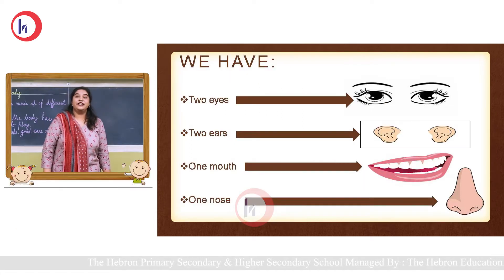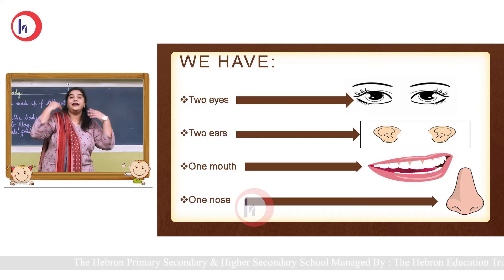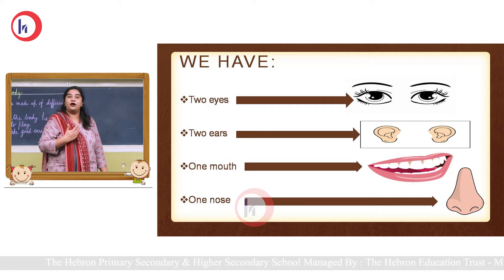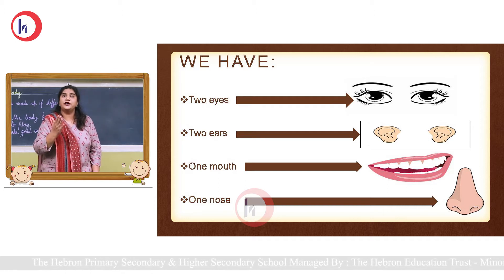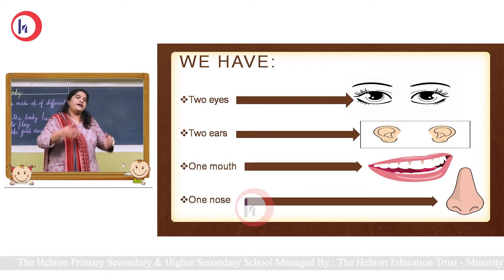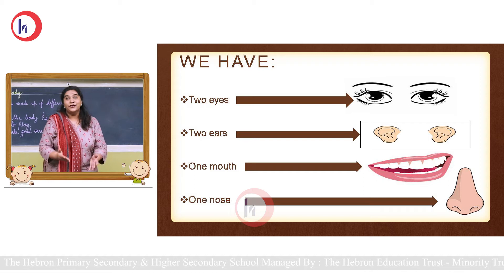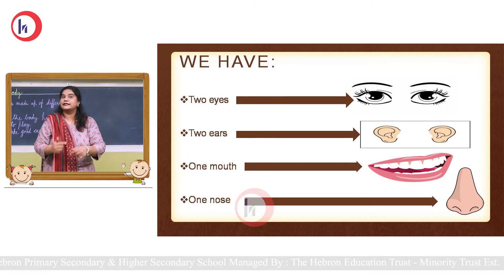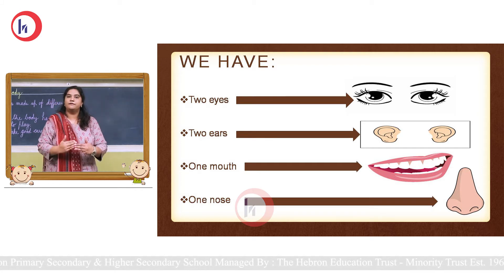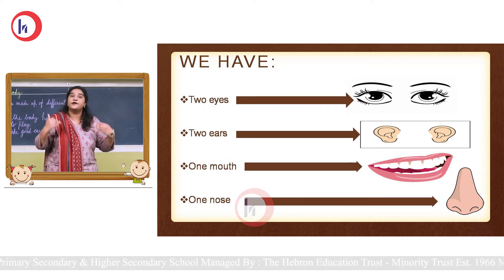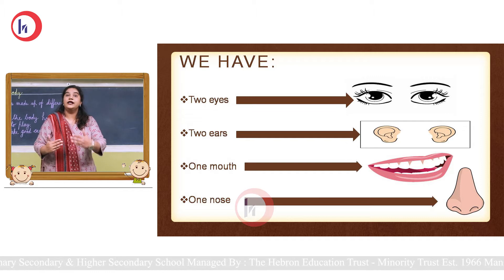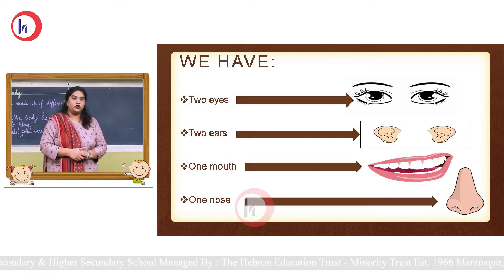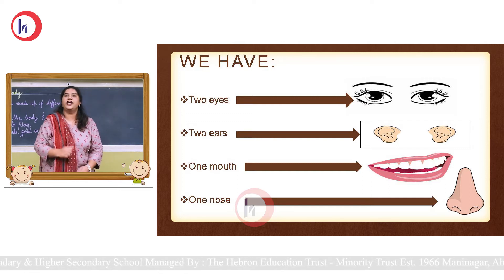Now we are going to learn more about it. As we have learned, there are many different parts in our body and each part has a special role to play. If I don't have eyes, will that be okay? No. If I don't have a tongue or a hand, will that be fine? No. Each part of our body is very important and plays a special role in our daily routine life.